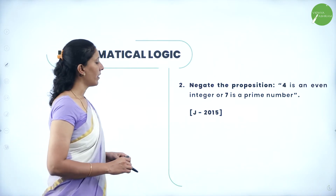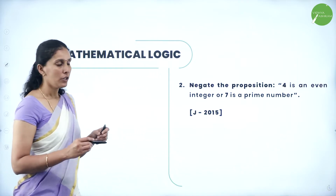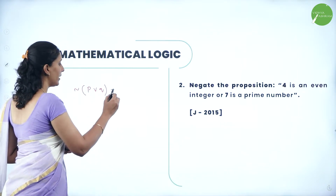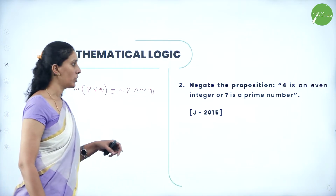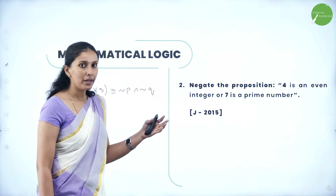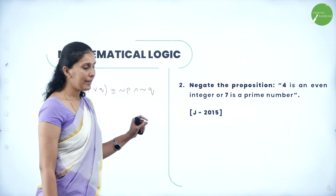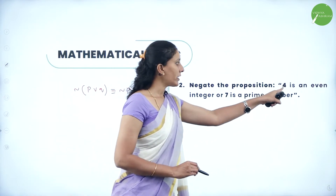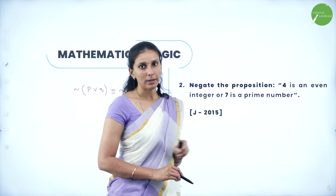Next, negate the proposition: 4 is an even integer or 7 is a prime number. So when we are negating P or Q, then it has to be written in the form of not P and not Q. So this is a rule of negation. So here we have 4 is an even integer. So negating means we have to write 4 is not an even integer, and 7 is not a prime number. So you have to write the statement as: 4 is not an even integer and 7 is not a prime number.